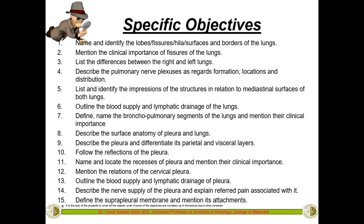Define and name the bronchopulmonary segments and mention their clinical importance. Describe the surface anatomy of the pleura and lungs. Describe the pleura and differentiate its parietal and visceral layers. Follow the reflections of the pleura, name and locate the recesses of pleura, mention their clinical importance, describe the nerve supply, and define the supra pleural membrane. We'll try to cover as much as possible, as some objectives will be covered in PBL sessions, TBL, seminars, and STLs.